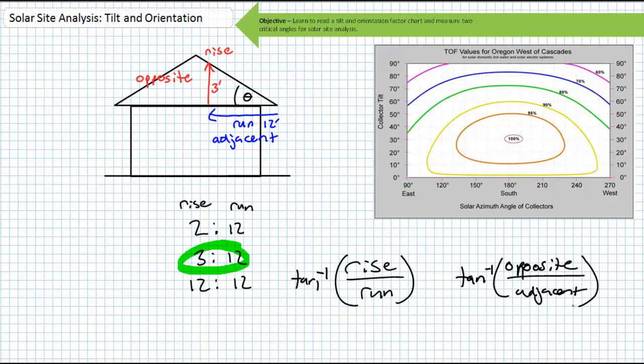For a typical 3 over 12 pitch roof, you'll find the angle is roughly 14 degrees. Notice this tilt, even with a perfect orientation of 180 degrees, our TOF is just inside the 95% ring. This isn't rocket science, so you can just estimate the value.